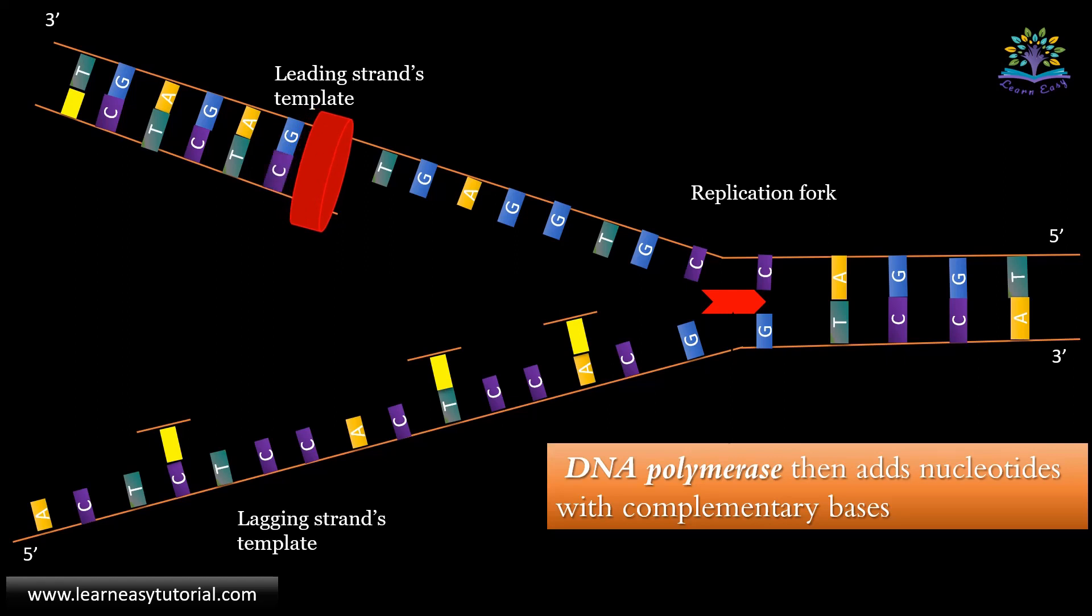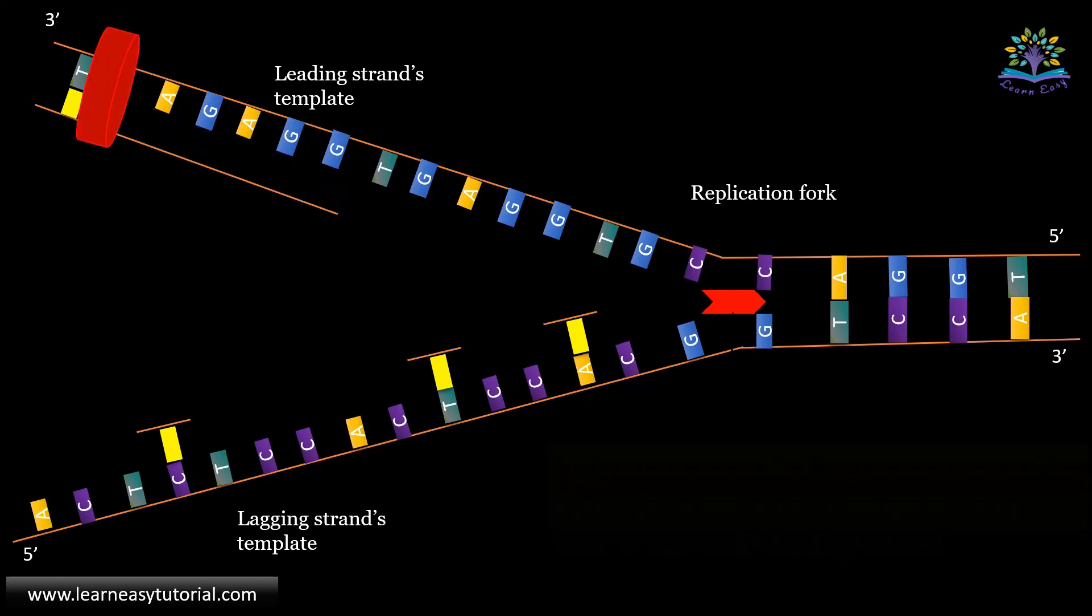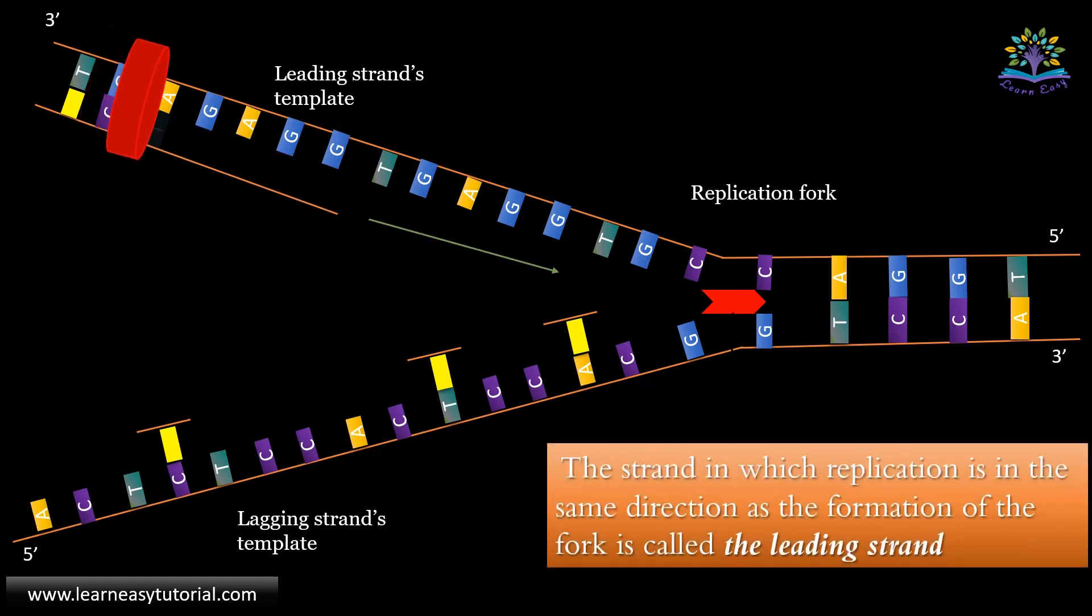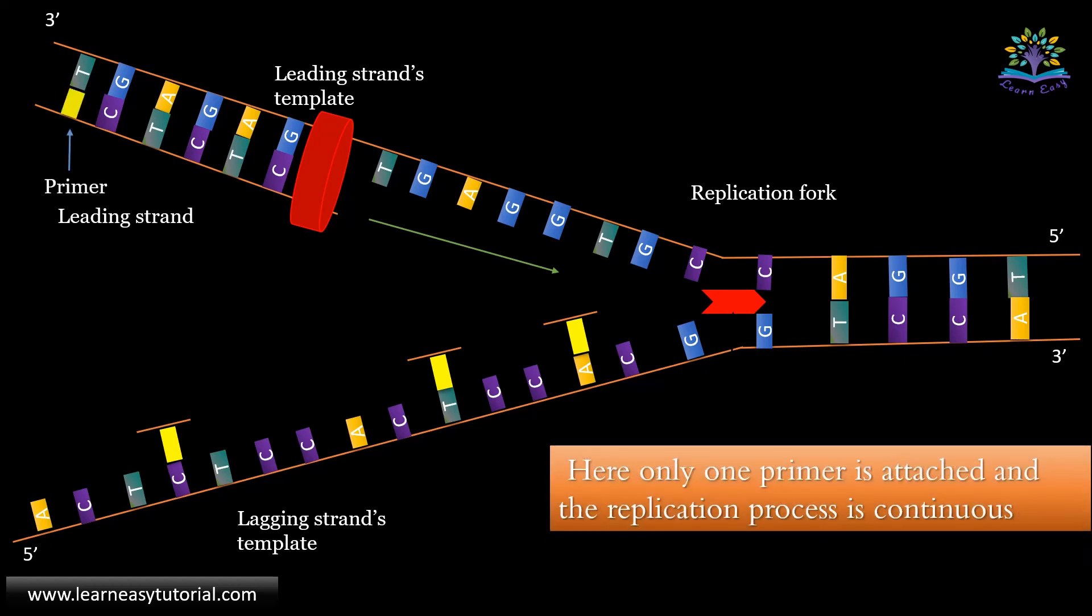The strand in which the replication is in the same direction as the formation of fork is known as the leading strand. Here only one primer is attached and the replication process is continuous.